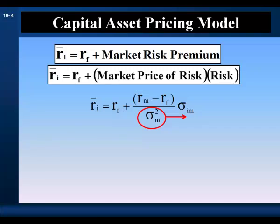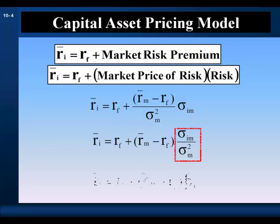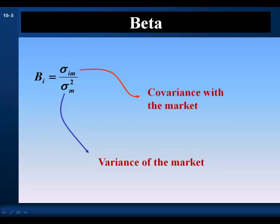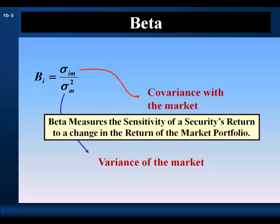Let's rearrange the equation and move the division by the variance of the market over to asset I's covariance. This standardizes the covariance. This measure is called the asset's beta. Beta is a standardization of the covariance measure and is the more common measure of market risk. Beta is the covariance with the market divided by the variance of the market, and it measures the sensitivity of a security's return to a change in the return of the market portfolio.